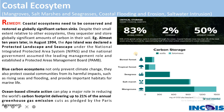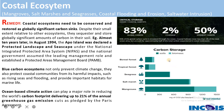Blue carbon ecosystems are significant in controlling and mitigating climate change consequences while storing excess carbon released into the atmosphere. They not only prevent climate change but also protect coastal communities. Some ocean-based climate actions can play a major role, reducing the global carbon footprint by delivering up to 21 percent of annual greenhouse gas emission cuts as pledged by the Paris Agreement.